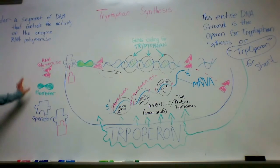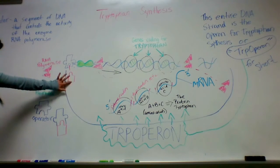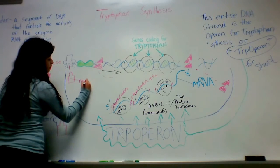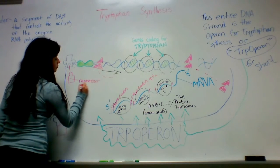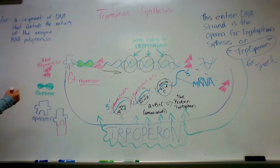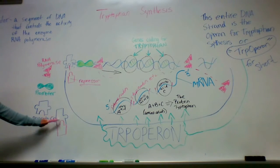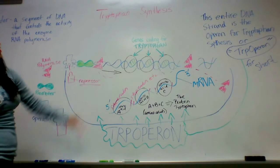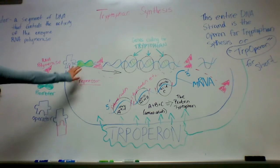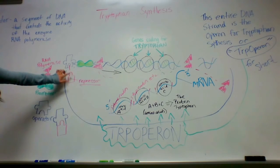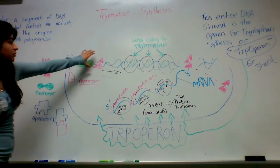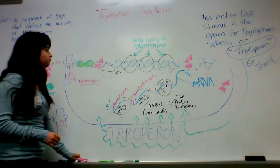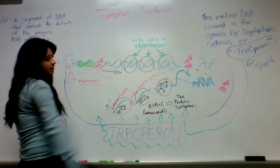The beginning of tryptophan synthesis is the releasing of the repressor. If it was connected, then the RNA polymerase wouldn't be able to bind to the DNA strand. So since the repressor is released, this is a promoter, and the RNA binds to this DNA strand, and it begins synthesis like the stages of transcription.